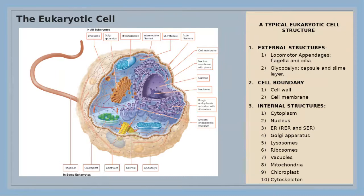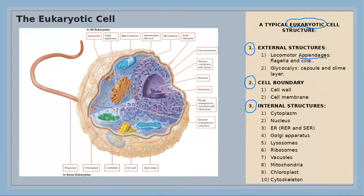The structure of the eukaryotic cell is similar to the prokaryotic cell. It has three main structures: the external structure, the cell boundary or cell envelope, and the internal structure. For the external structure, some eukaryotic organisms have appendages used for movement, like flagella and cilia.